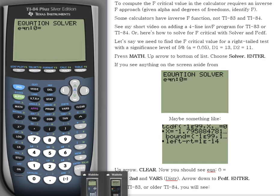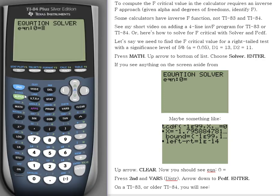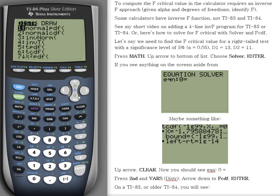If you see anything on the screen aside from Equation Solver, for example, if you see something like this, then up arrow and you'll be in the equation solver window. Press the CLEAR button and now you see the screen we want to see.